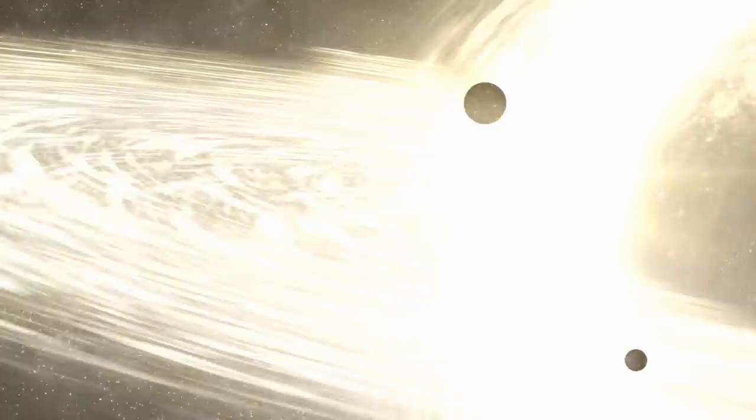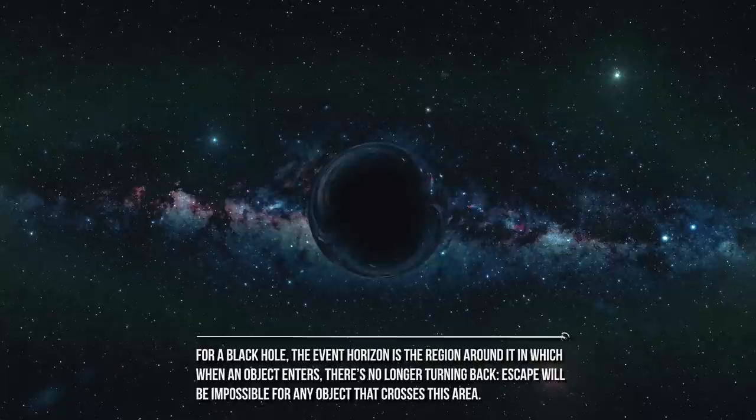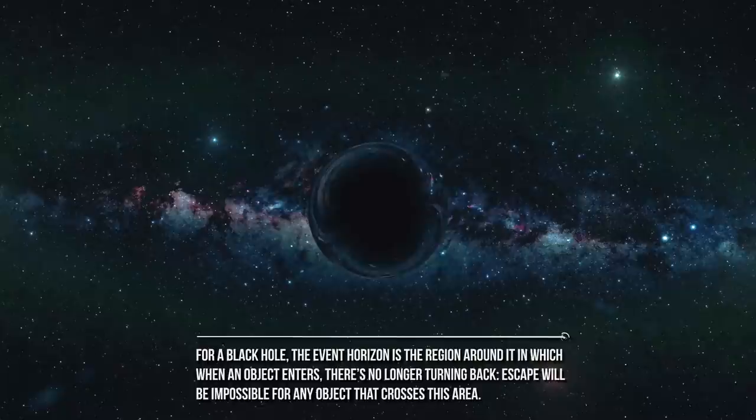Another thing that these two universal twins have in common is that they both have their own event horizon. Do you remember what that is? For a black hole, the event horizon is the region around it in which, when an object enters, there's no turning back. Escape will be impossible for any object that crosses this area.